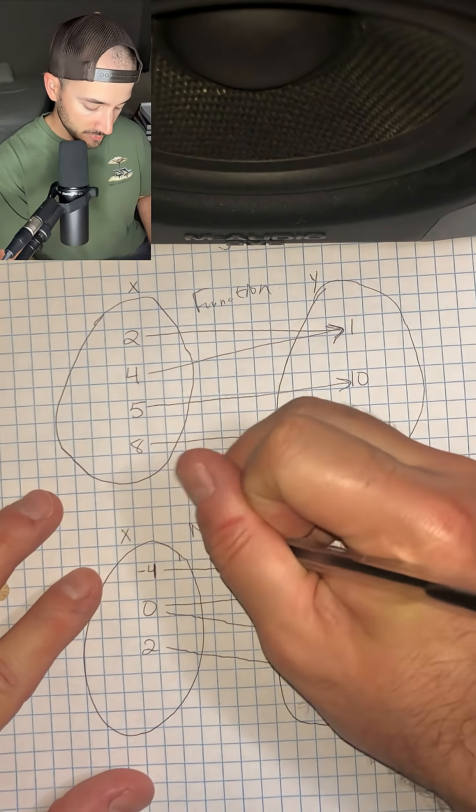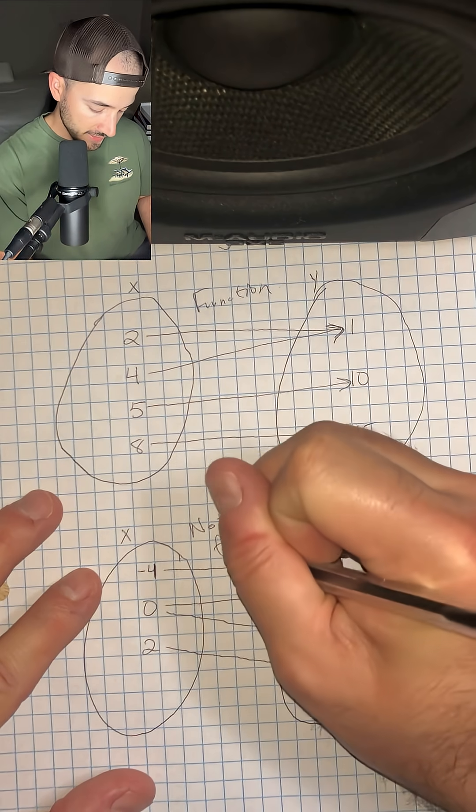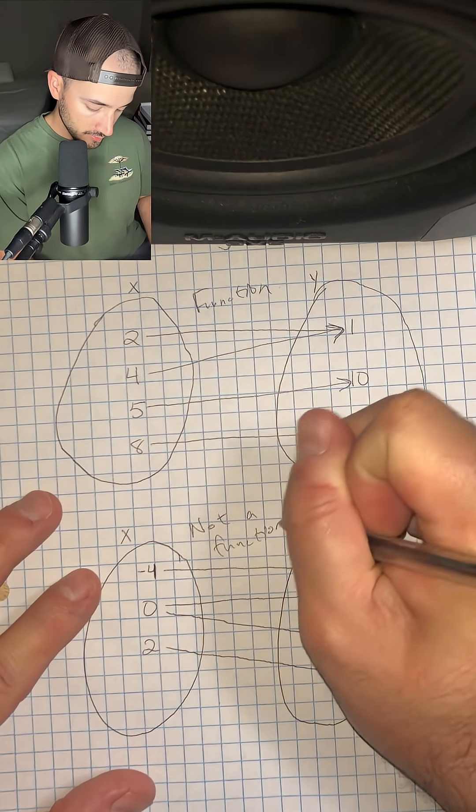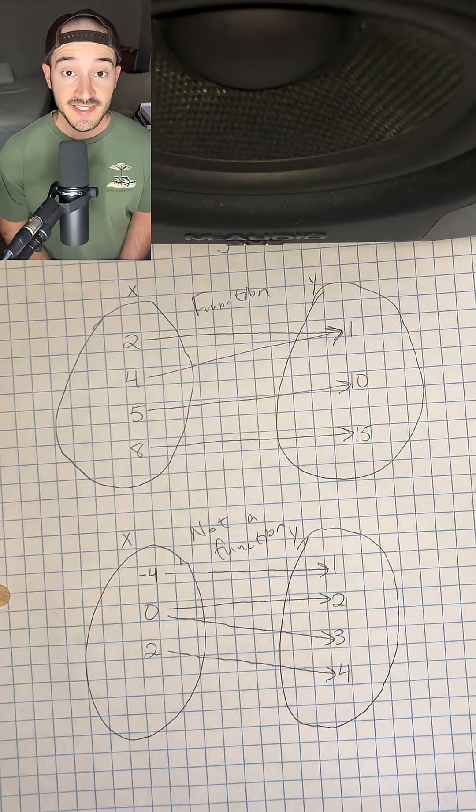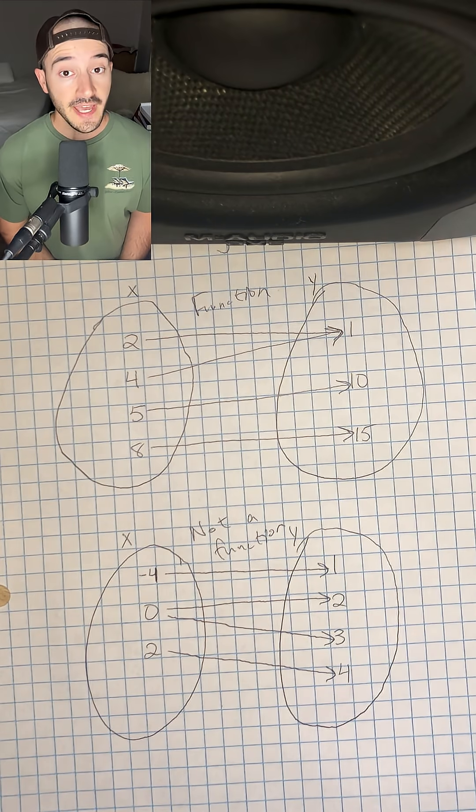So this mapping is going to be not a function, because each input can only have one output.